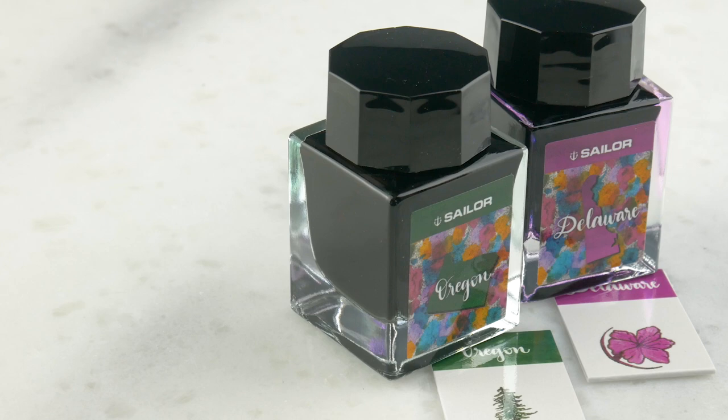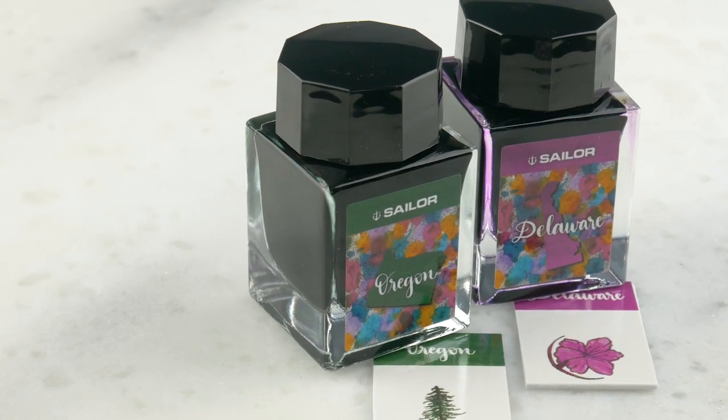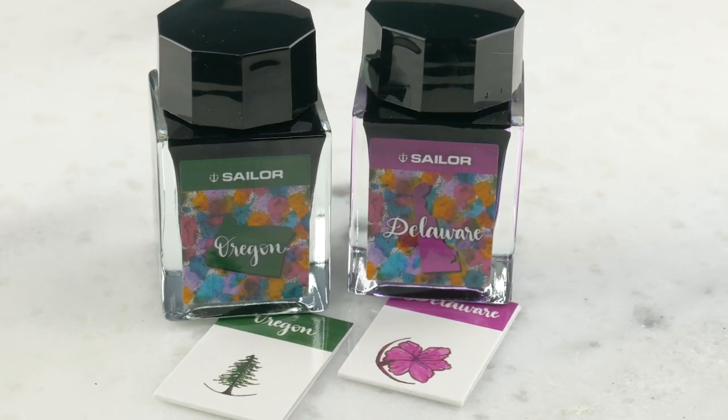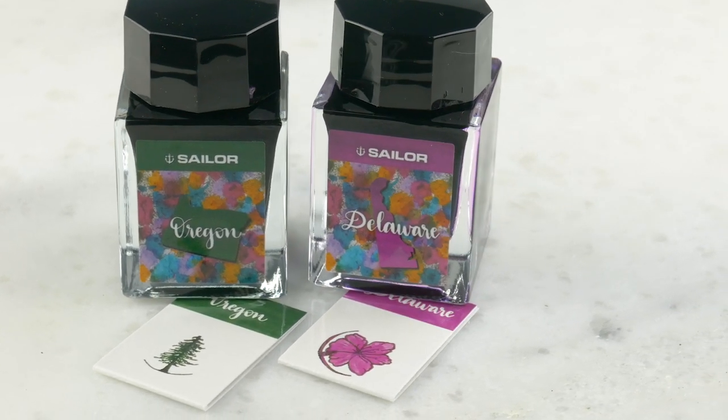Sailor has added a ton of stuff this year. Sailor has added to their 50 States ink line with Oregon, which is a really pretty green, and Delaware, which is a really pretty magenta. These literally just came in yesterday so I haven't even swabbed them yet. I'll do that today. The Oregon looks great. Really pretty colors, they've done a nice job with all the different colors. I'm on the hunt for a new green.